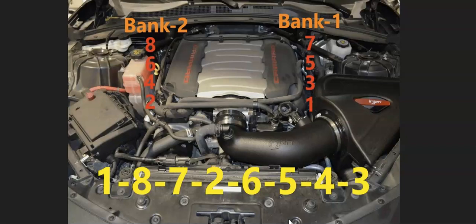But starting with the cylinder location, when you open up the hood on the driver's side, it's going to be one, three, five, seven. On the passenger side, it's going to be two, four, six, eight.